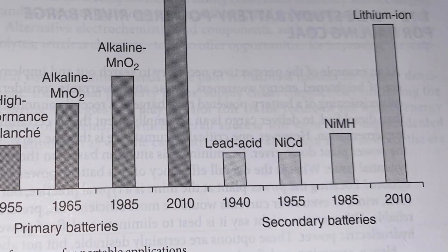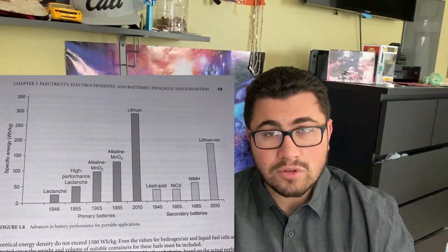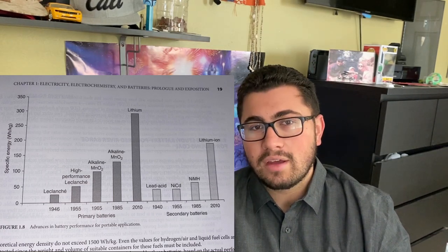Secondary batteries include the lead acid battery, which is the one you'll see in the front of people's cars — the one you'd have to jump-start if the battery dies. We then have nickel cadmium, which was commonly used until the rise of lithium ion in recent years, and nickel metal hydride (NiMH). The big one of all secondary batteries is lithium ion, which is most commonly used and really took a rise because of consumer electronics like phones and computers, and now because of the rise of electric vehicles has become even more commercialized.